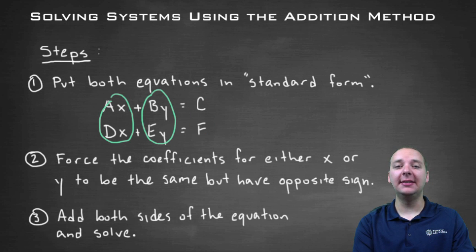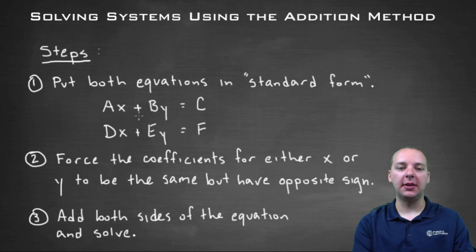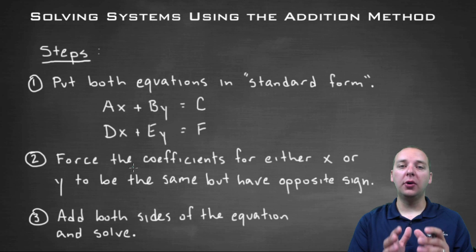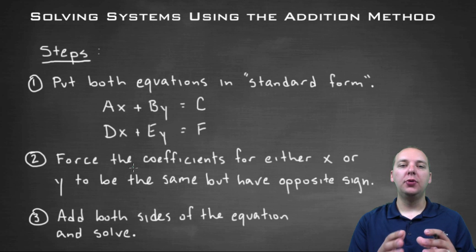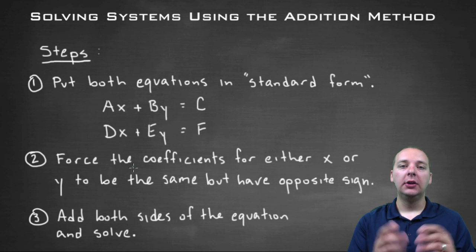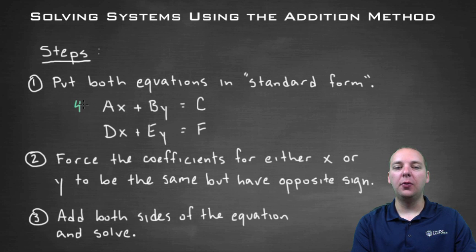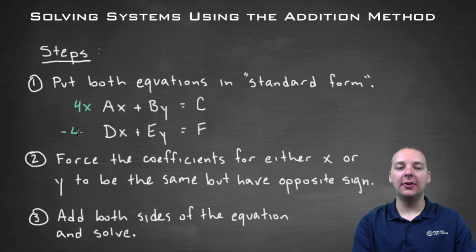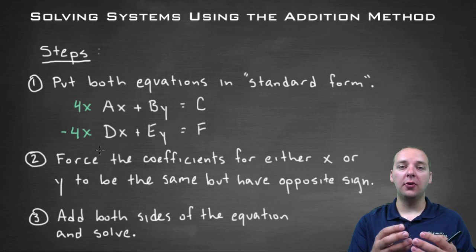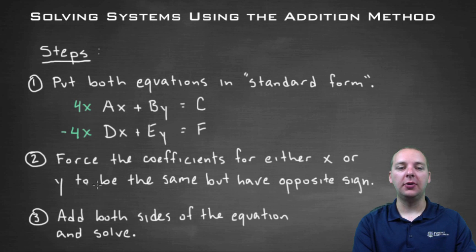The next thing we're going to do is the key step — this is what's unique about the addition method. What we'll do is try to force the coefficients for either the x or the y to be the same numerical value, but have opposite signs from one another. For example, your x's in the first equation might be 4x, and in the second equation you would make it equal to negative 4x — same numerical value 4, but one's positive and one's negative. That's what you're after in step two.